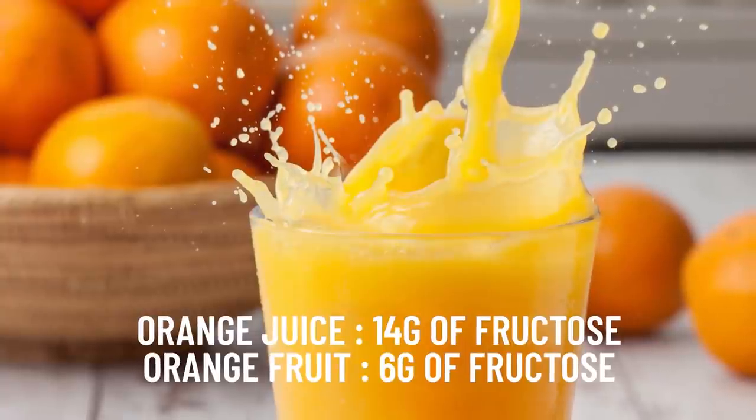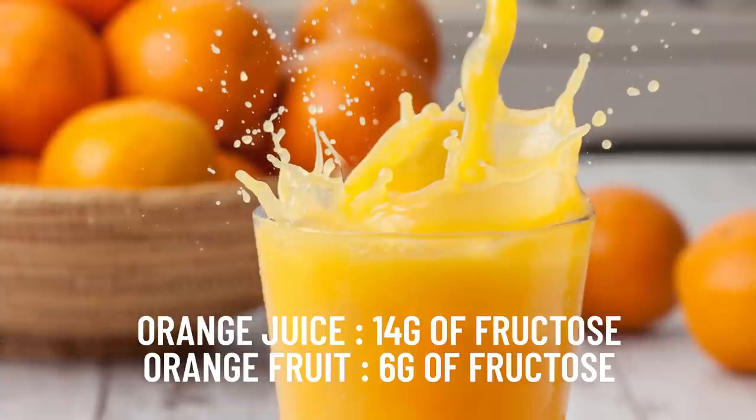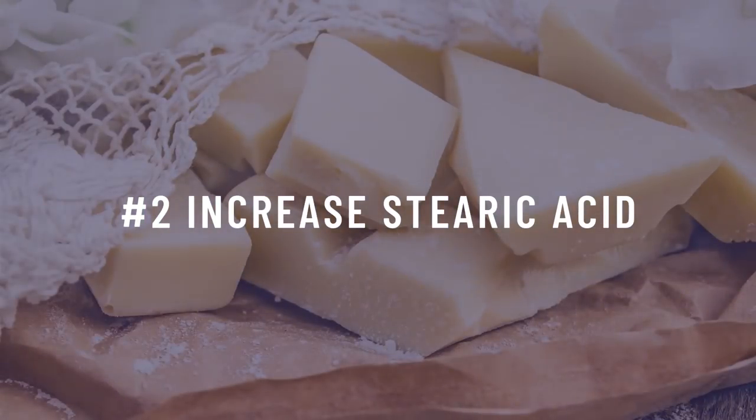Fruit juice is also a concern — one cup of orange juice has 14 grams of fructose, whereas one orange in whole food form contains only six grams. Some people choose to decrease their fruit intake entirely and only stick to low sugar fruit, but I don't think that is necessary for everyone. If you can at least cut out pop and fruit juice, this will significantly reduce your fructose intake and in turn lead to a reduction in visceral fat.